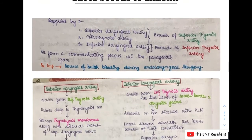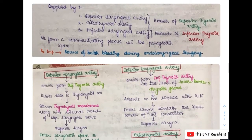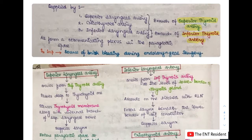Next we head over to the blood supply. The arterial supply of the larynx is mainly by three arteries: the superior laryngeal artery, the cricothyroid artery — both branches of the superior thyroid artery — and the inferior laryngeal artery, which is a branch of the inferior thyroid artery. All three arteries form a communicating plexus in the paraglottic space, which can be a source of brisk bleeding during endolaryngeal surgeries.